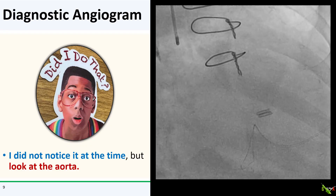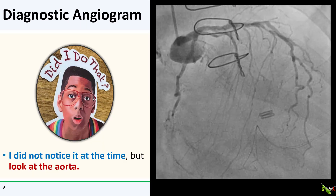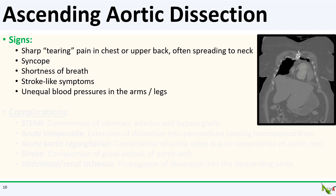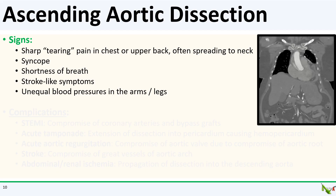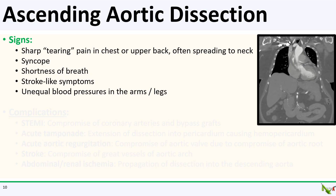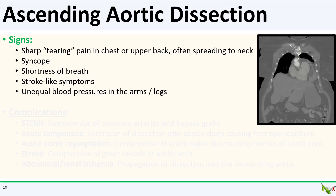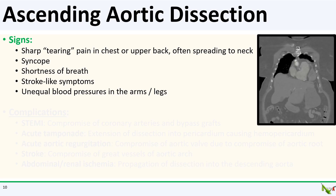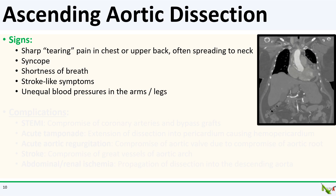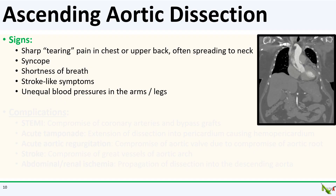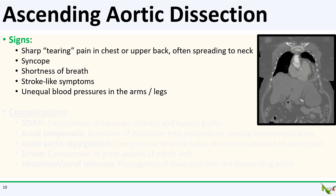In any event, she needed surgery right away. Classically, patients with ascending aortic dissection describe a sharp tearing pain in the chest or upper back, often spreading to the neck. Our patient did not have back pain — just upper chest and neck pain. Symptoms can be associated with shortness of breath if the pericardium is affected, or syncope and stroke-like symptoms if the arch vessels are affected. Unequal blood pressures in the arms versus legs can also be seen.